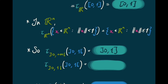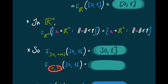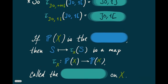Let's think about this abstractly. If we contemplate the power set of our set x — the set of subsets of x — then we've defined an assignment that carries a subset S of x to its closure. This is a map from the power set to the power set, and it's called the closure operator on x.